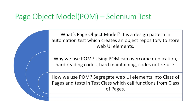How do we use page object models? The general structure we follow is we create classes of pages and we basically segregate web UI elements in those classes. Then we also have a class of tests — different test classes — which basically call functions from the class of pages. It kind of segregates the two different elements into separate folders and separate classes, which will be clearer once I show you the project structure.